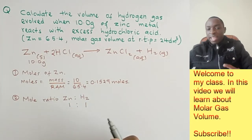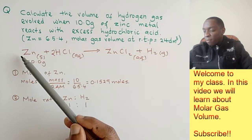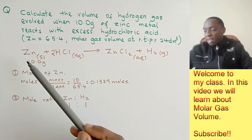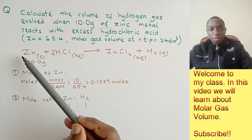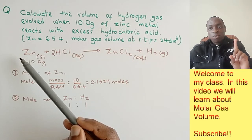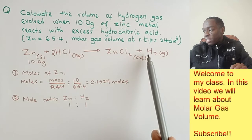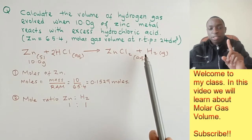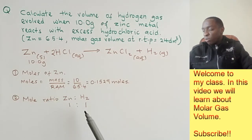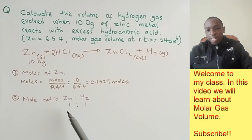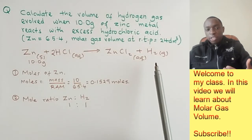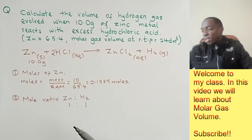The mole ratio between zinc and hydrogen as per the equation is 1:1. I got these numbers by checking the coefficient before each element. Before zinc there is nothing, so it means 1. Before hydrogen there is nothing, so it's also 1. So the mole ratio is 1:1. One mole of zinc would react with hydrochloric acid to give 1 mole of hydrogen and 1 mole of zinc chloride.